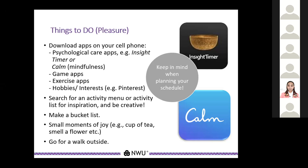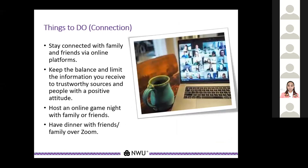Make a bucket list. Take small moments of joy — for example, drinking a hot cup of tea in winter or smelling a flower — and put these moments in your schedule. Don't forget to plan these joyful moments, or just be spontaneous here and there. You can also go for a walk outside. Stay connected with family and friends via online platforms, and keep the balance by limiting the information you receive to trustworthy sources and people with a positive attitude.